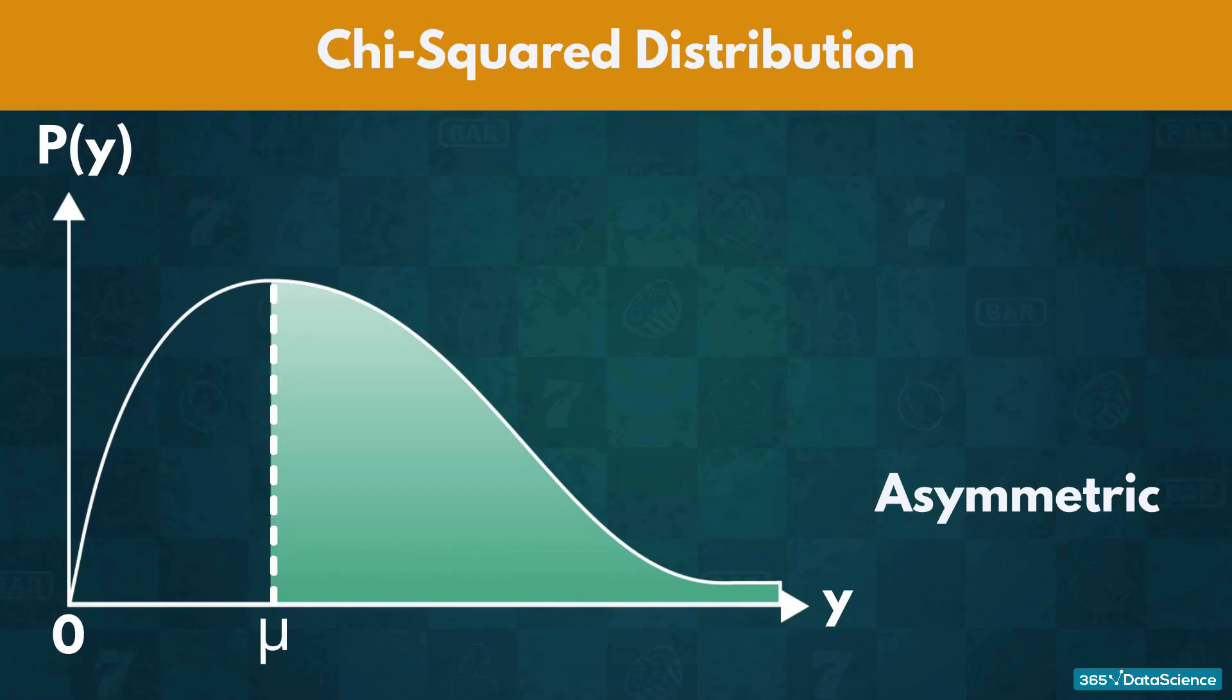Its graph is highly skewed to the left. Furthermore, the values depicted on the X-axis start from zero, rather than a negative number.